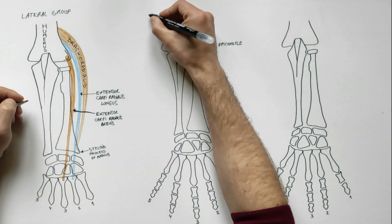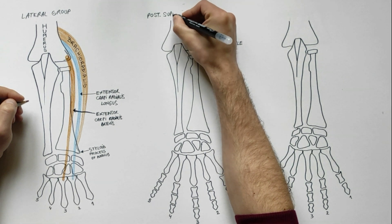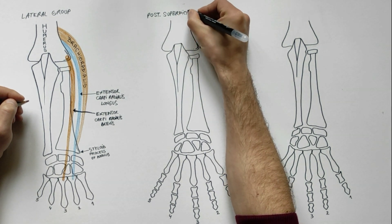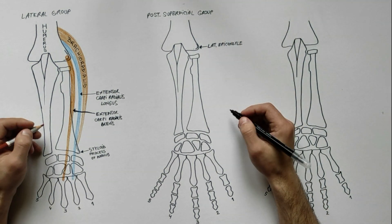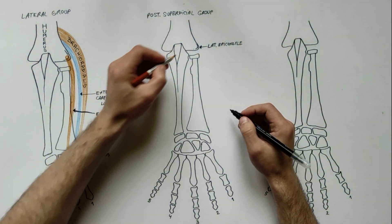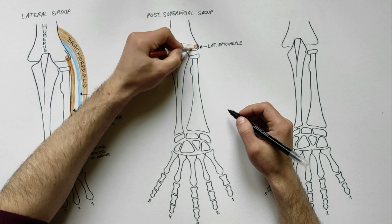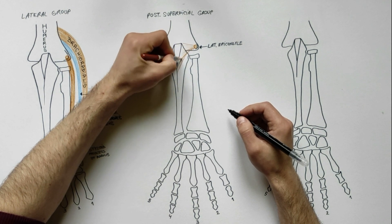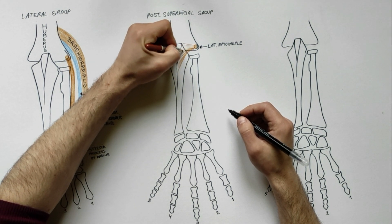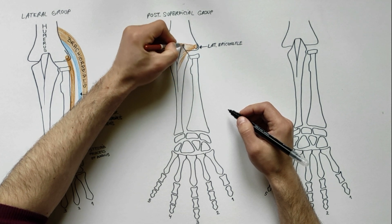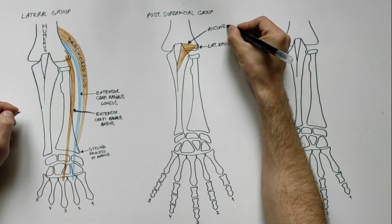The next group of muscles to be described is the posterior superficial group, which contains four muscles. Having origin from the lateral epicondyle of the humerus and inserting into the lateral side of the olecranon process and upper one-fourth of the posterior surface of the ulna is the anconeus muscle.